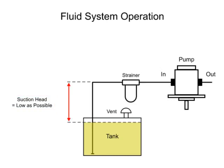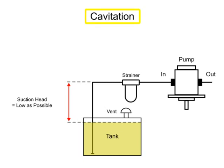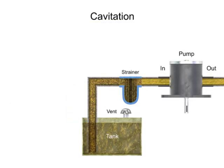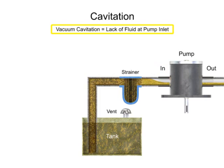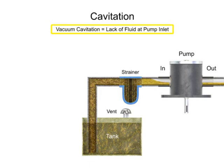Several issues may occur if enough fluid does not flow to the pump inlet. One such scenario is called cavitation. The most common form of cavitation occurs when the inlet fluid is not entirely filling the cavities which open up for it on the pump inlet. This type of cavitation is called vacuum cavitation, a condition commonly known as starving the pump because not enough fluid makes it to the inlet.